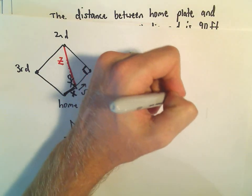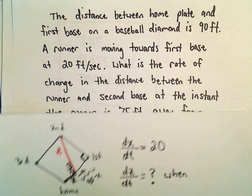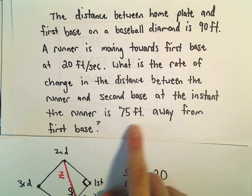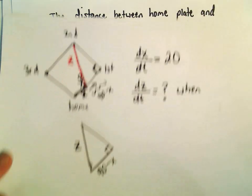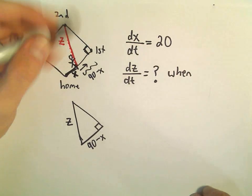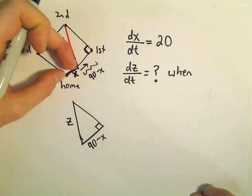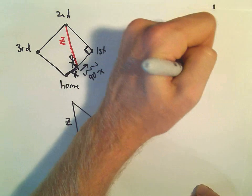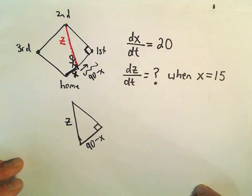And we want to do that when he was 75 feet away from first base. So if he's 75 feet away from first base, he's only ran 15 feet. So we would do that when x equals 15.